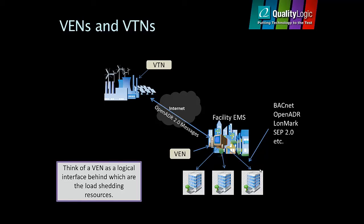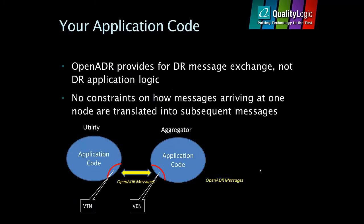Think of a VEN as a logical interface behind which are the load-shedding resources. OpenADR provides for demand-response message exchange and not demand-response application logic. There are no constraints on how messages arriving at one node are translated into subsequent messages.